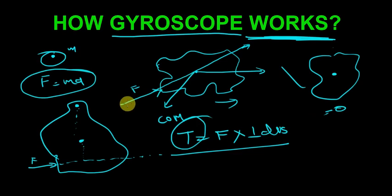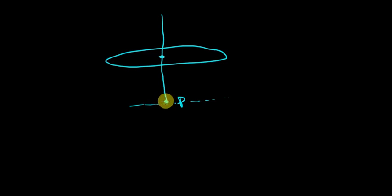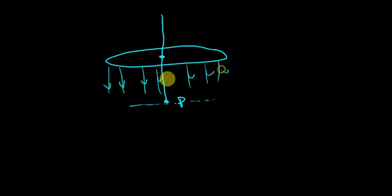Also important: force and torque are vector quantities that add according to the laws of vector addition. Now let us understand what happens if we try to balance something like a top on a point P. If the center of mass is directly above P, the force of gravity acts vertically downward through that point, and the top will balance itself and won't fall.